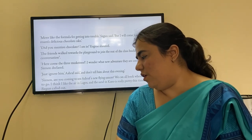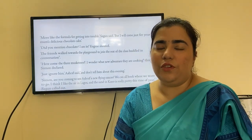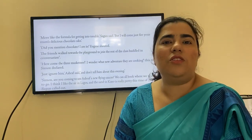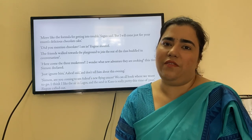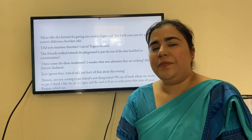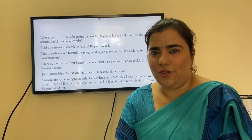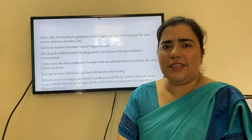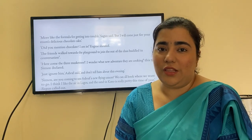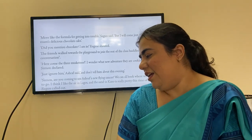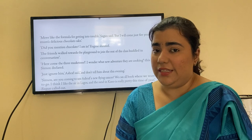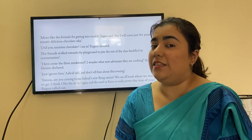'Here come the three musketeers — I wonder what new adventure they are cooking this time,' Simon declared. Three Musketeers is a famous novel about three best friends and their adventures, and here Ashraf, Segan, and Eugene are being referred to as the three musketeers because they stick together through all their disasters. 'Just ignore him,' Ashraf said, 'and don't tell him about this evening.'